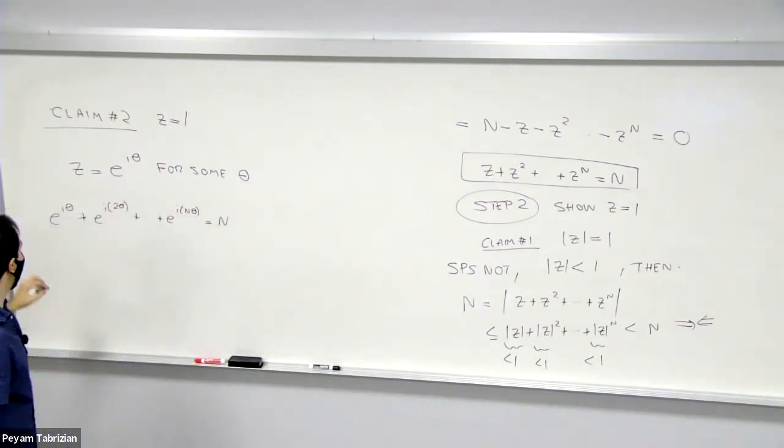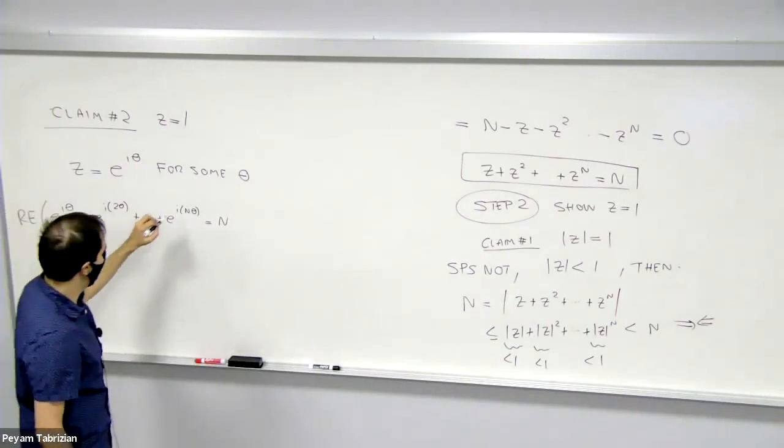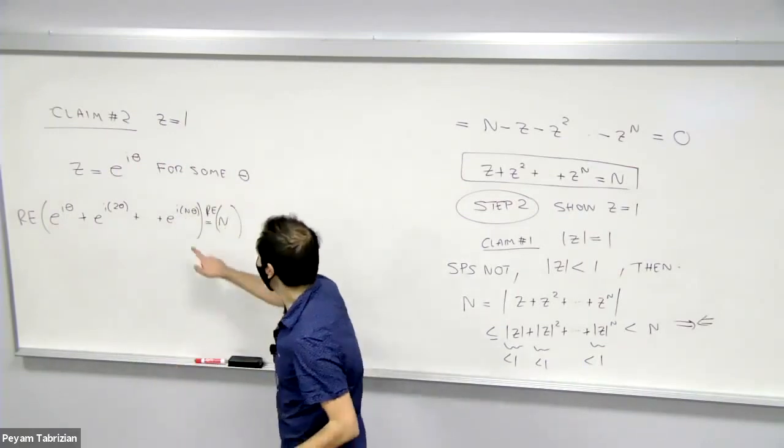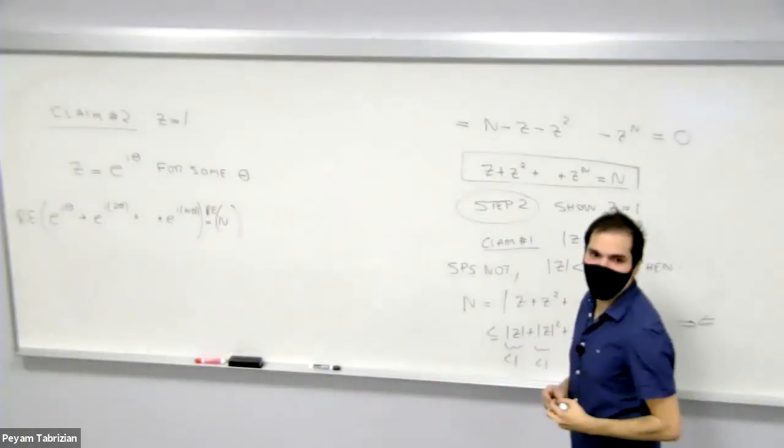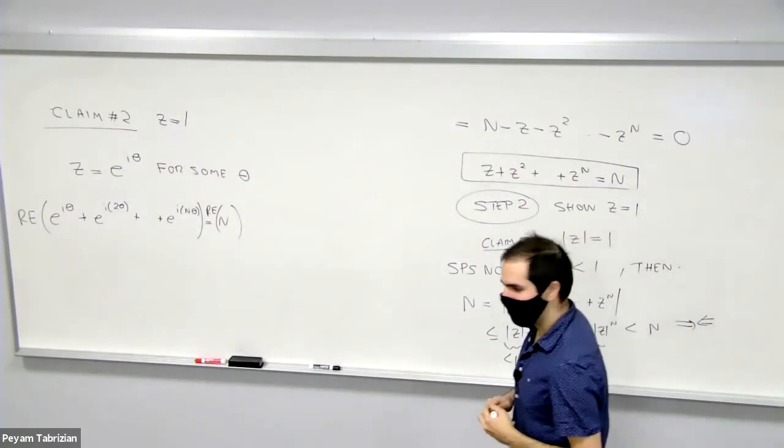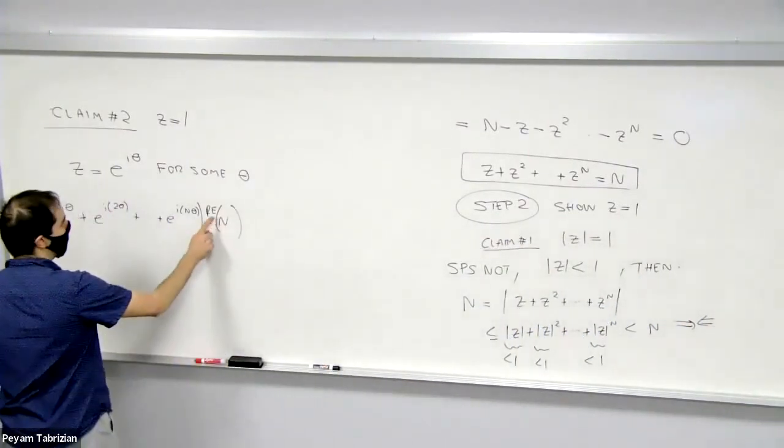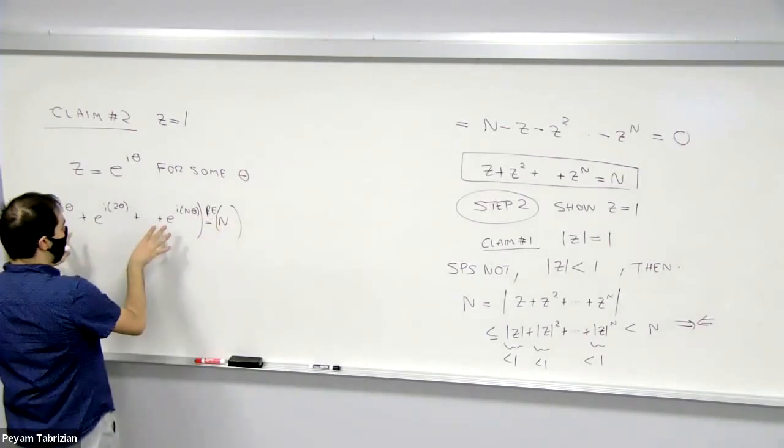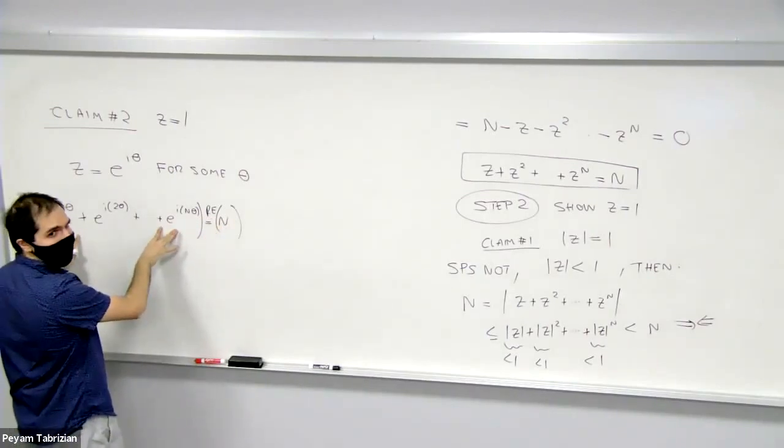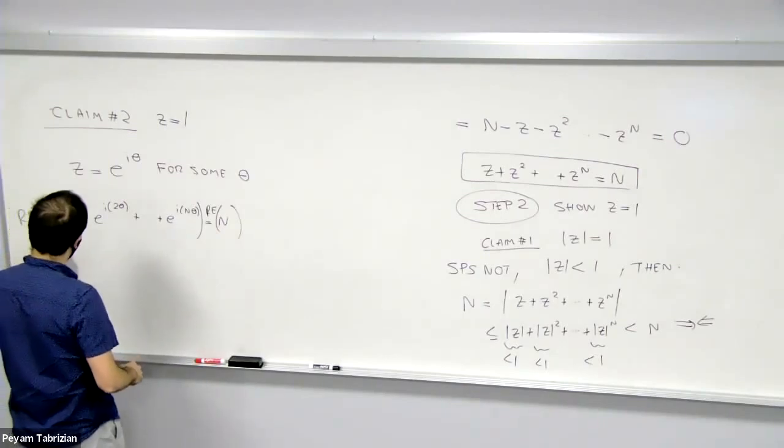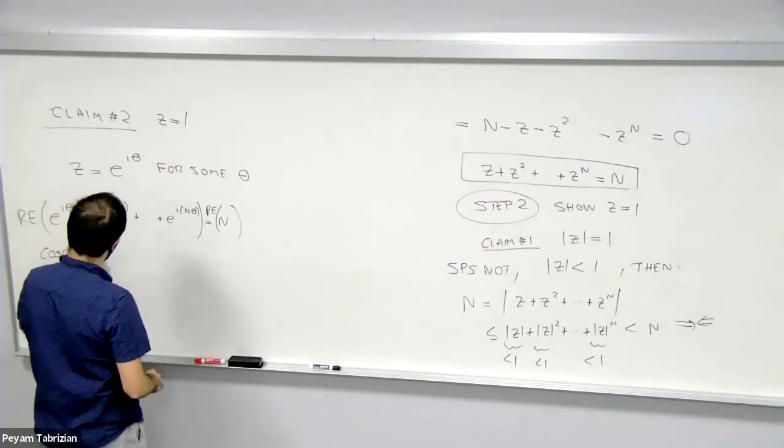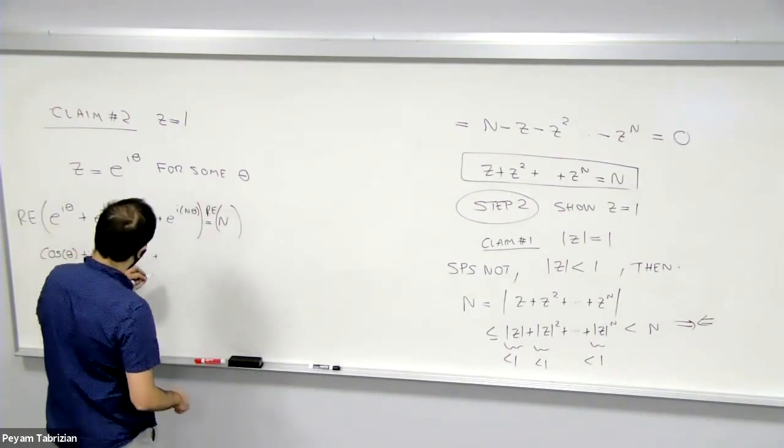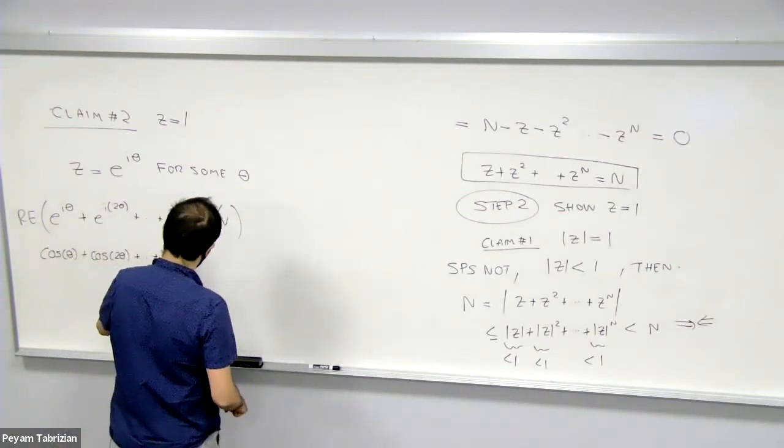But now just taking the real part of this. To get the real part of this is the real part of n. And then the real part, the nice thing is all this becomes a bunch of cosines. So cos(θ) + cos(2θ) + ... + cos(nθ).